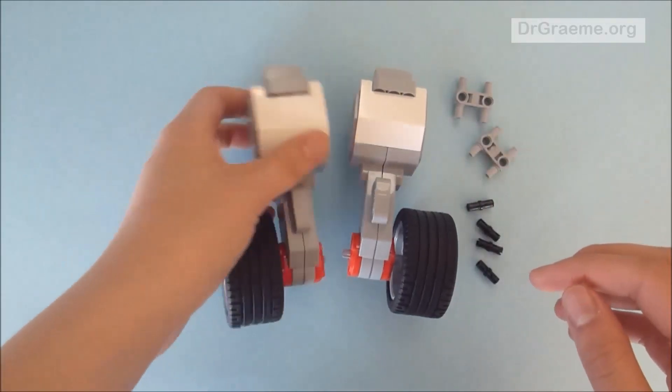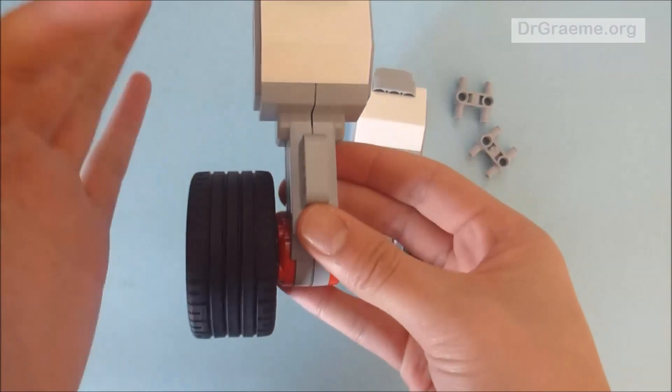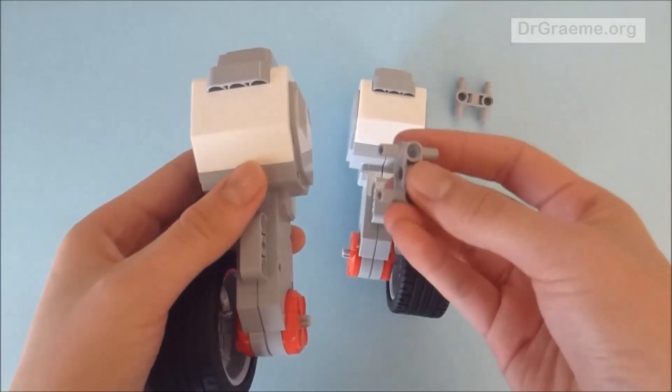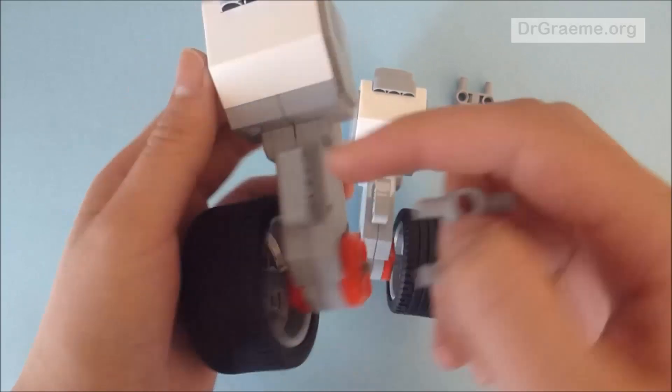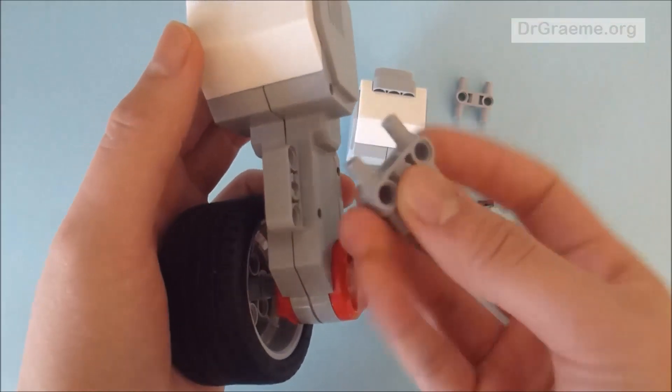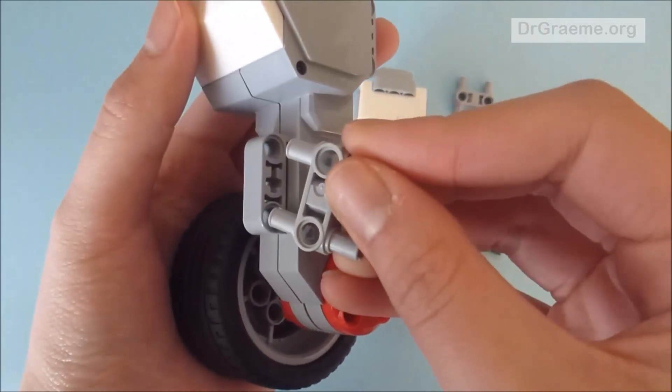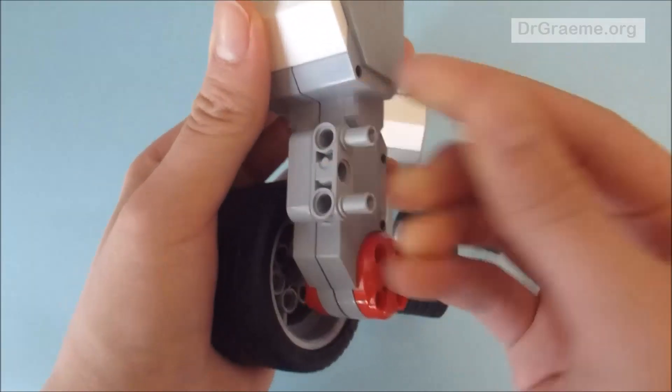Now we take one of the motors and you notice how on this one the tires are on this side. So we want to put an H piece in these two holes on the other side. Put them in here, push them through, and they should click.